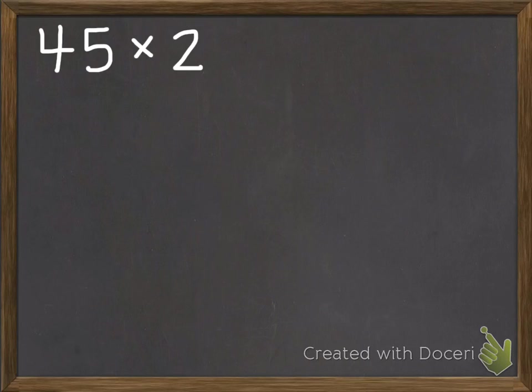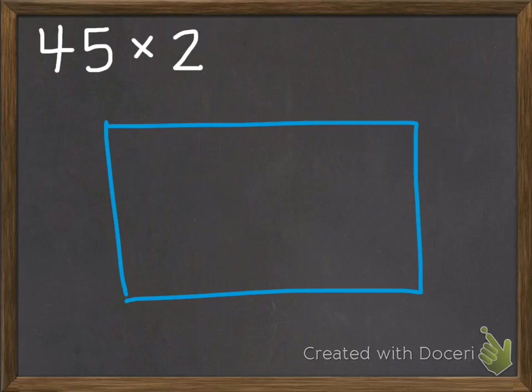Let's try one more together. Starting with my rectangle. I'm going to break up the 45 into 40 plus 5. And this side is 2.